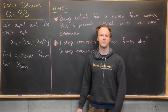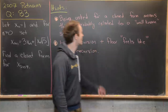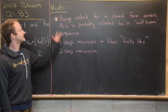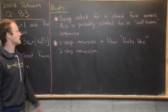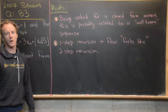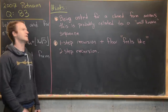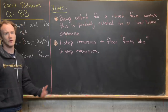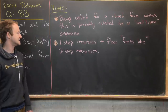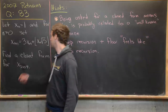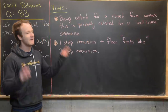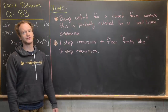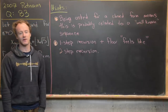In fact, as we'll see, we'll find a closed form for the arbitrary nth term, which is kind of nice. Before jumping into the solution, let's look at some hints. My first hint is that being asked for a closed form means this is probably related to a well-known sequence — it would be hard to write down a closed form unless it involved some well-known numbers. My second hint is that a one-step recursion plus a floor function feels like it should be a two-step recursion; keep that in the back of your mind.